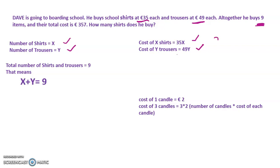I will explain why we wrote these two like this. For example, if cost of one candle is 2 euros, then cost of three candles will be 3 into 2 — that is, total number of candles into cost of each candle gives total cost. Similarly, cost of each shirt into total number of shirts gives cost of that many shirts, and cost of each trouser into total number of trousers gives cost of that many trousers.